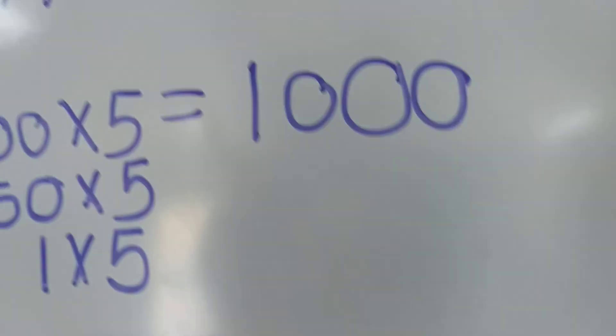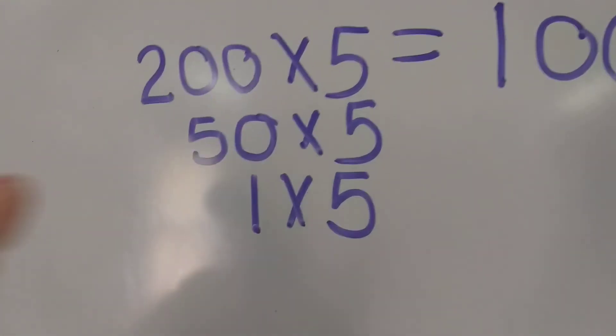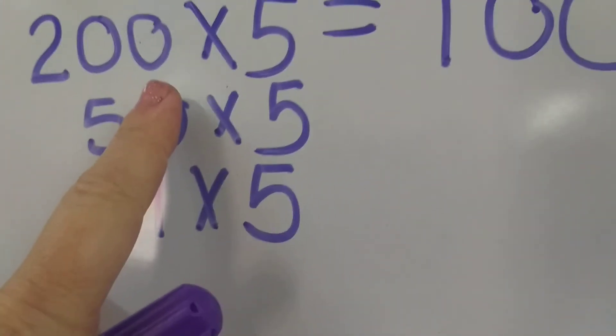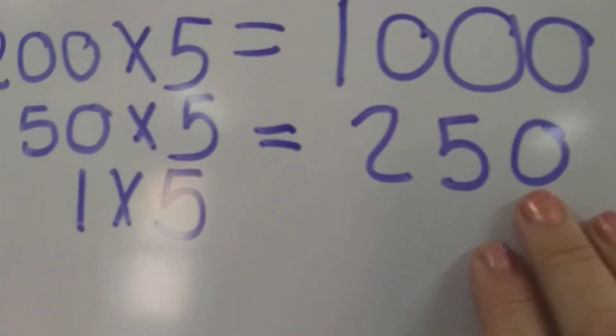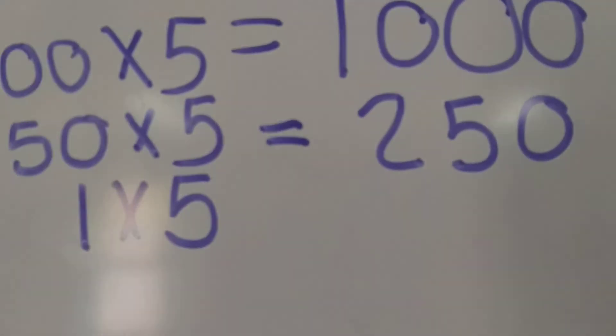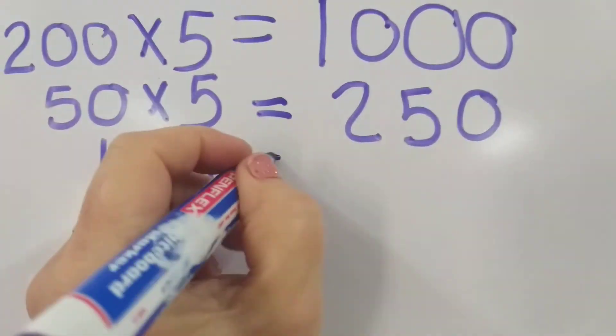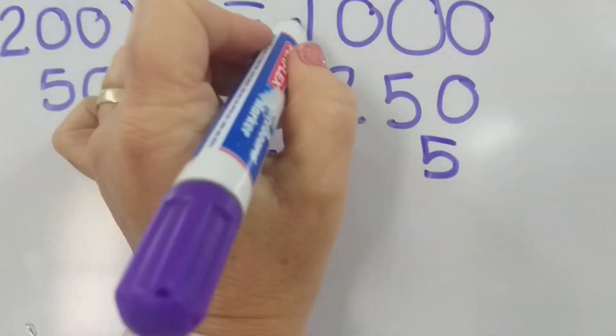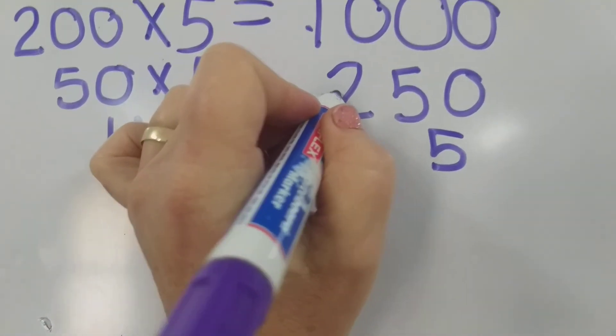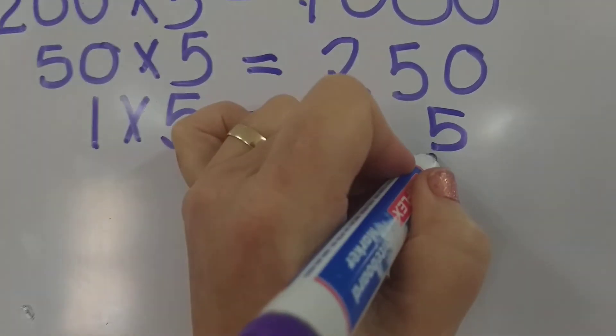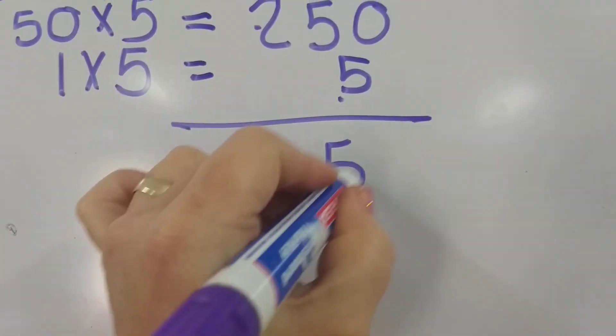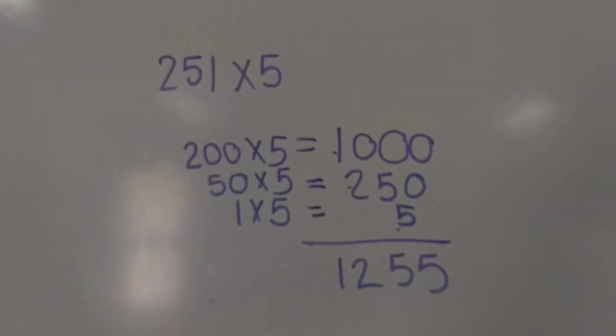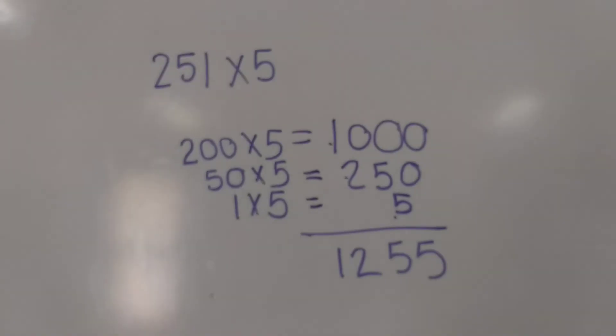So we have it on top of 1,000. 50 times 5, cover up the zero. 5 times 5 is 25. Add on a zero. So we have 250. 1 times 5 is 5. 1,255 is the answer, the final answer for E.